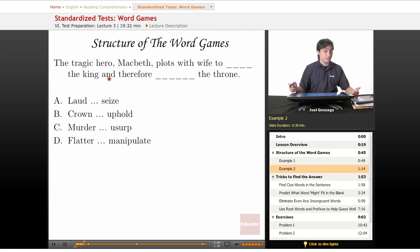What do you do when you have two blanks? Well, that's kind of scary and fun. Basically, what's happening here is that we have the tragic hero plots with his wife to blank the king and therefore blank the throne. What do I mean by this? Well, we'd have to figure out which pair actually fits together.